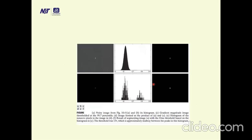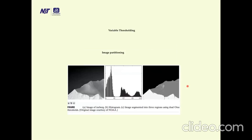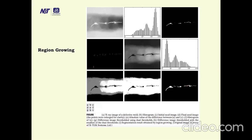These are the different outputs — good quality outputs with variable thresholding. Partitioning and region growing is also an important concept. We have already studied region growing in the previous lecture.